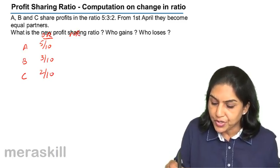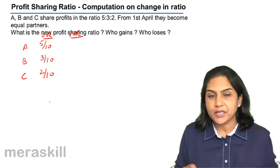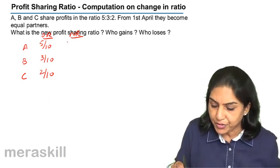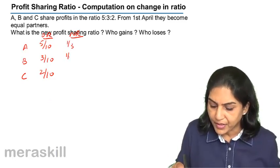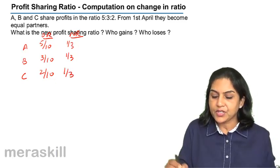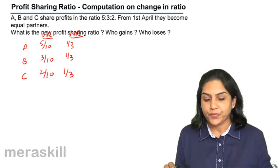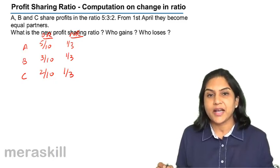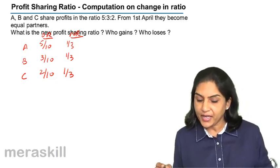What is the new ratio now? They are equal partners. Equal partners, 3 people, therefore it must be 1 by 3, 1 by 3, and 1 by 3. This is the new ratio. So what is the sacrificing ratio or the gaining ratio?